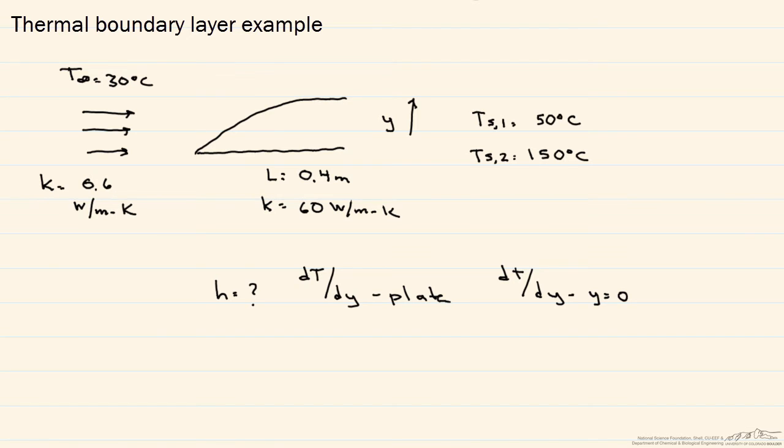What we want to find in this problem is that convective heat transfer coefficient. We want to find the temperature gradient within the plate, and we want to find the temperature gradient at the surface. In this case, our y is going in this direction, therefore this is going to be the temperature gradient at y equals 0.